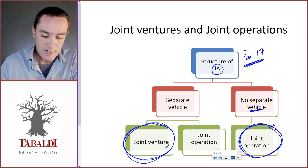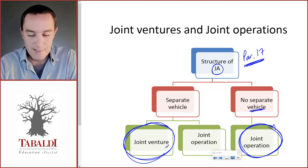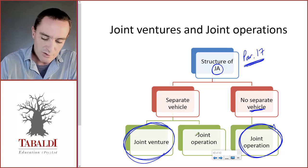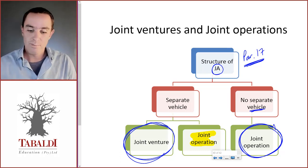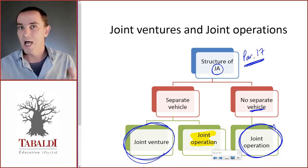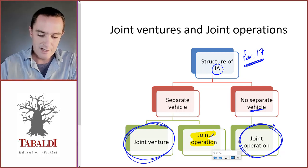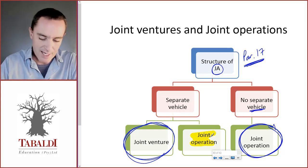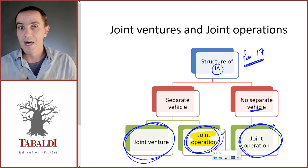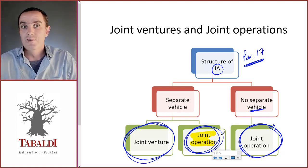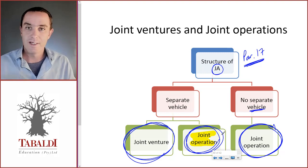With a separate vehicle, it is usually a joint venture because the investors only have rights to the net assets — the equity — of that separate vehicle. However, in some cases it could still be a joint operation: if the separate company was established solely for these investors, meaning they are the only customers and the only suppliers, with no transactions with other parties. In that case it could still be classified as a joint operation under paragraph 17. Make sure you highlight the relevant paragraphs and practice discussion questions on classifying joint arrangements as joint ventures or joint operations.